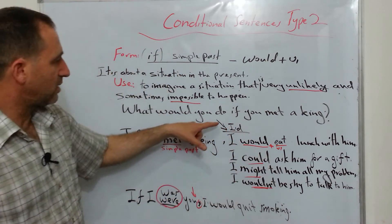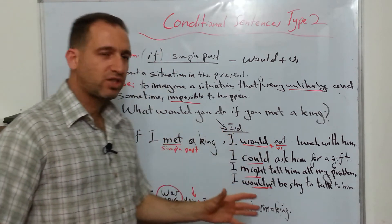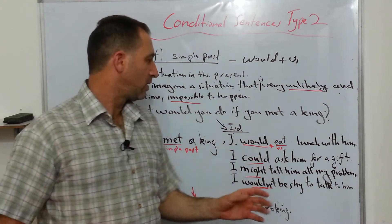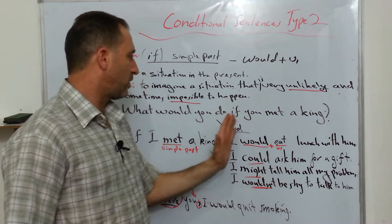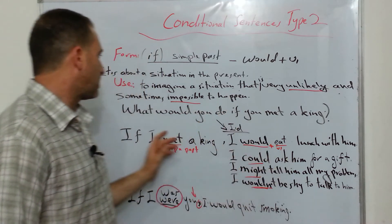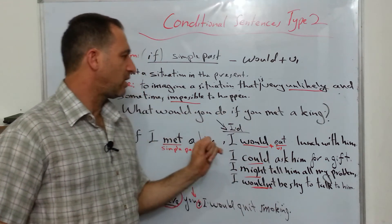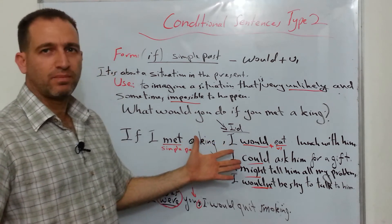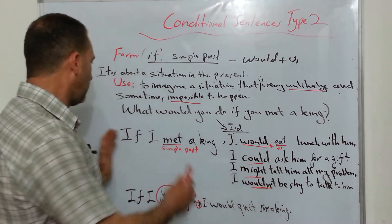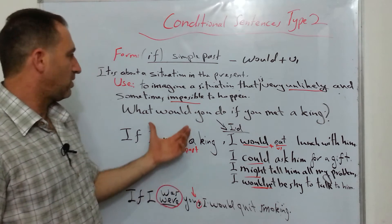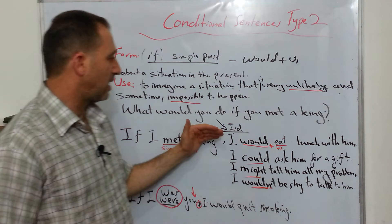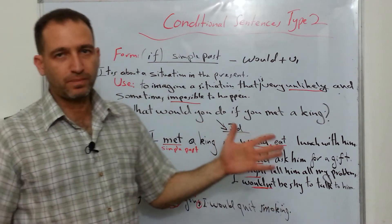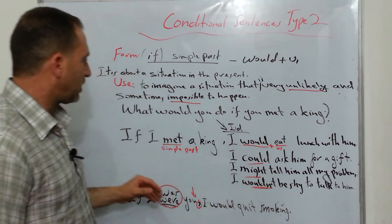Here I added I'd. It's the contraction or small form of I would. And I can use it especially when I want to answer the question using one part. For example, what would you do if you met a king? I'd eat lunch with him. No need to say if I met a king because you know the situation is presented here using if. So you can simply say I'd eat lunch with him. So that case is done.